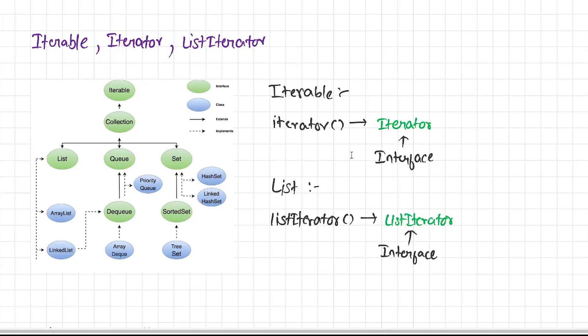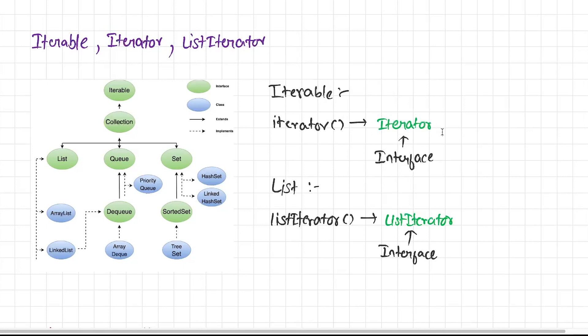What does this iterator method do? It simply returns an instance of iterator. And here, iterator is an interface. So iterator is basically an interface that is present in the collection framework.